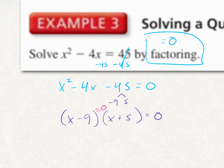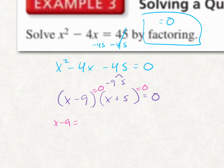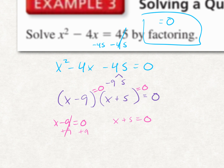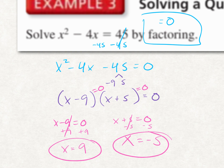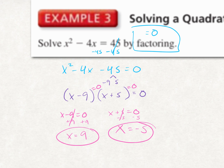Set both parentheses equal to zero as two separate equations: x minus 9 equals zero, and x plus 5 equals zero. Solve each separately. Adding 9 to both sides gives x equals positive 9. For the second equation, since 5 is being added to x, subtract 5 — x equals negative 5. So our two solutions are x equals 9 and x equals negative 5. Just like with linear equations, you can plug your answers back into the original equation to check.